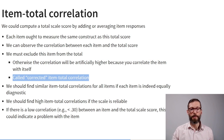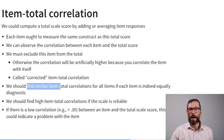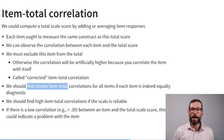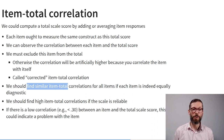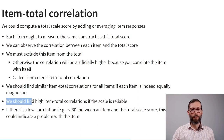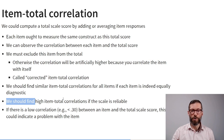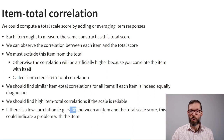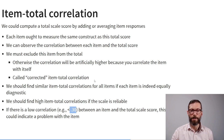What we hope to find is that every individual item has similar item-total correlations, meaning each item is equally diagnostic — one of the assumptions of Cronbach's alpha. Moreover, if the scale is reliable, item-total correlations should be high. A low correlation — for example, smaller than 0.30 — between an item and the total score could indicate a problem with that item, and if all correlations are low, we probably have an unreliable scale.